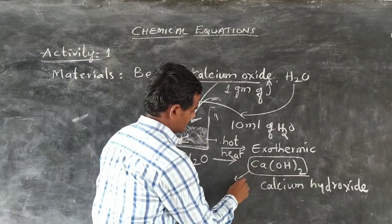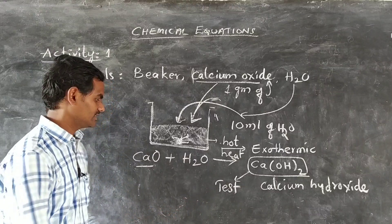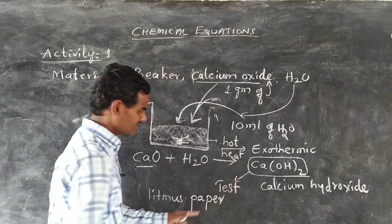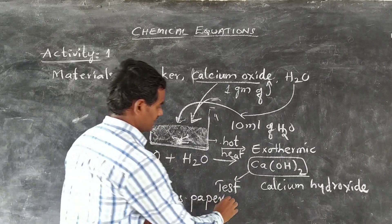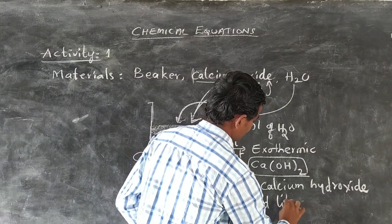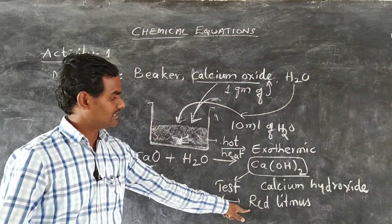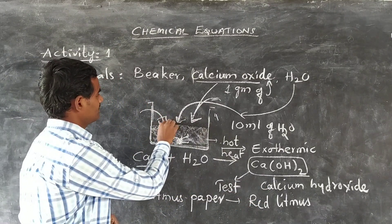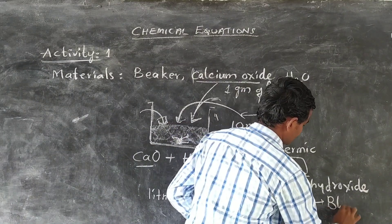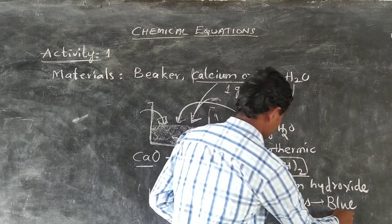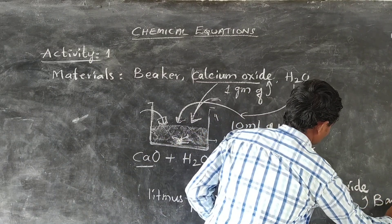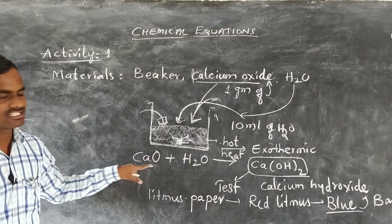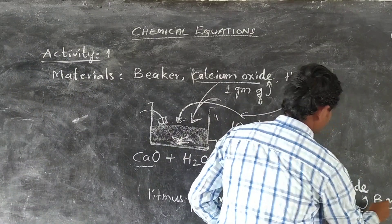We can test whether it is an acid or base with the help of litmus paper. When this red litmus paper is kept in this solution, it changes to blue litmus. Red litmus paper changes to blue, which means it is a base. So, the product formed after the reaction of calcium oxide with water is basic in nature.